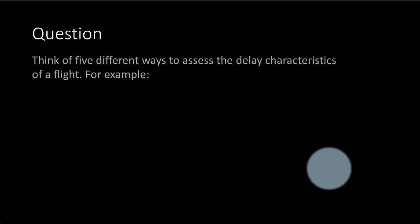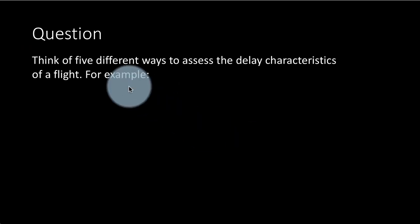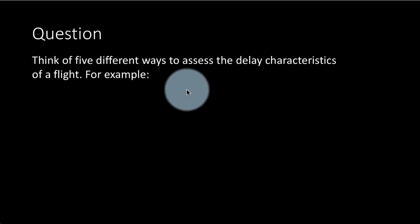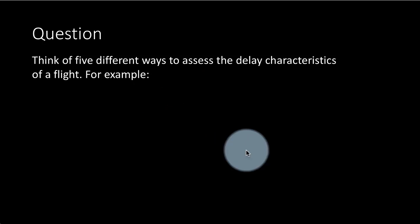This question is more about thinking about data than really about doing anything with dplyr. We're just saying think of five different ways to assess the delay characteristics of a flight. So you can think of arrival delay, departure delay, etc.